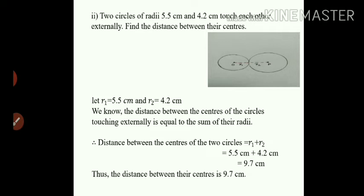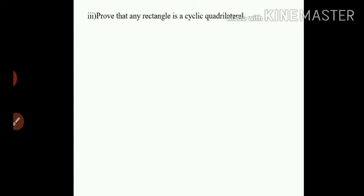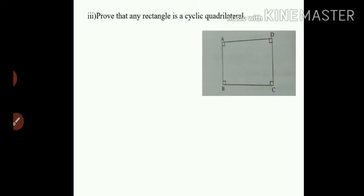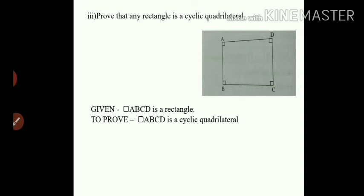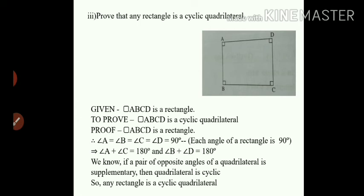Sub-question number 3 is a proof question: prove that any rectangle is a cyclic quadrilateral. First, draw rectangle ABCD. Given: quadrilateral ABCD is a rectangle. To prove: quadrilateral ABCD is a cyclic quadrilateral. Since ABCD is a rectangle, every angle is a right angle — angle A equals angle B equals angle C equals angle D equals 90 degrees, since each angle of a rectangle is 90 degrees.